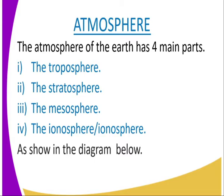When we talk about the atmosphere, it has four main layers. The first one is the troposphere — the layer that is just next to the Earth's surface. After the troposphere, we have the stratosphere. After the stratosphere, we have the mesosphere. After the mesosphere, we have the one referred to as the ionosphere or thermosphere.